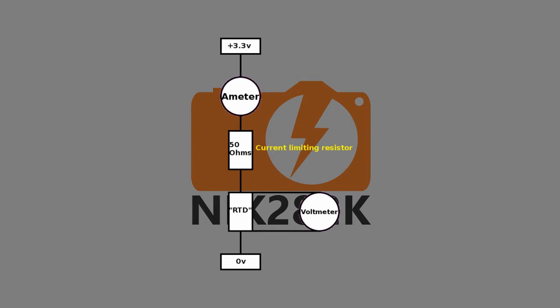The 50 ohm resistor is to limit the current through my RTD and prevent it from self-heating. By knowing the current passing through the RTD and the voltage dropped across it, it's possible to calculate its resistance using Ohm's Law.